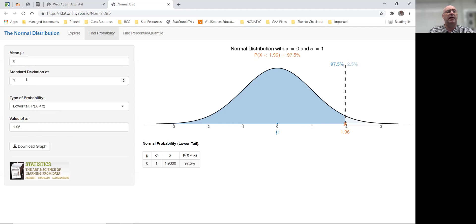Again, a mean of 0 and a standard deviation of 1. And you can see here that approximately 97.5% of all values are less than a z-score of 1.96.